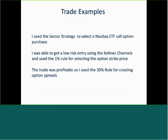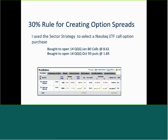This was for NASDAQ ETF QQQ. We used the sector strategy to select this NASDAQ call option. We got a low risk entry point using the Keltner channels, and then we used the 1% rule for selecting the option strike price. The trade was profitable, so we used the 30% trade management rule for creating an option spread — in this case a market-neutral spread.